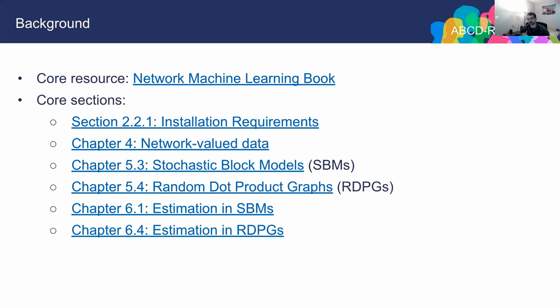The core resource for this lecture is a network machine learning textbook we've been working on, which aggregates information, intuition, and techniques useful for working with network-valued data. The core sections are 2.2.1, covering installation requirements for the software package GraSPy; chapter 4, covering basics of network-valued data and the adjacency matrix; sections 5.3 on stochastic block models, 5.4 on random dot product graphs, 6.1 on estimation in SBMs, and 6.4 on estimation in RDPGs.